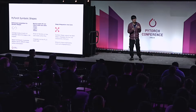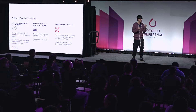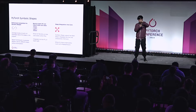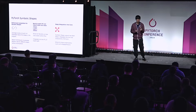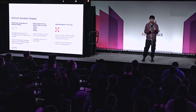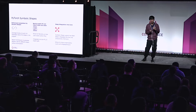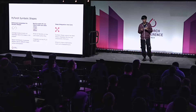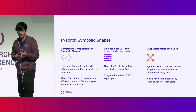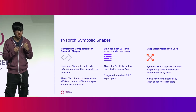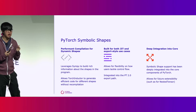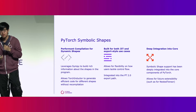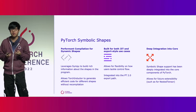One thing that historically made dynamic shapes so difficult for a compiler is that you really need this to work across all layers of your stack. If your compiler supports dynamic shapes but your front end does not, you end up with a system that doesn't support dynamic shapes. When we were looking at supporting dynamic shapes with PyTorch 2.0, we knew we couldn't do it in a half-baked manner. Implementing this system required a lot of investment across many layers of our stack. As a result, we now have a system that allows Torch compiler to generate efficient code for different shapes without needing to recompile, built for both JIT and export-style use cases, and deeply integrated into the core components of PyTorch.